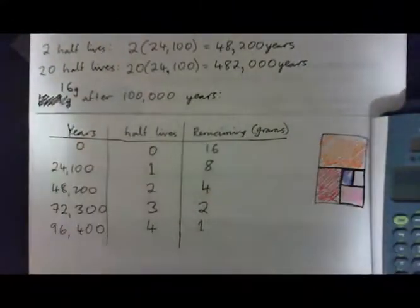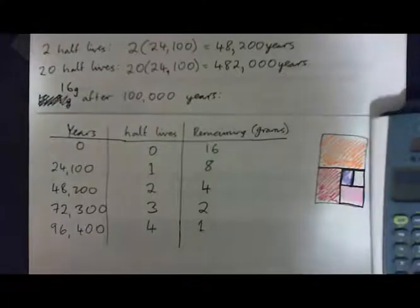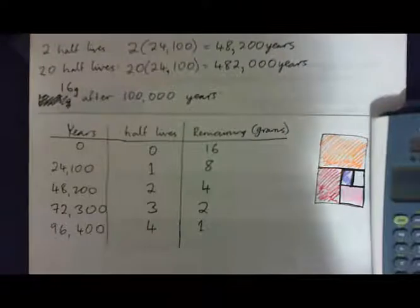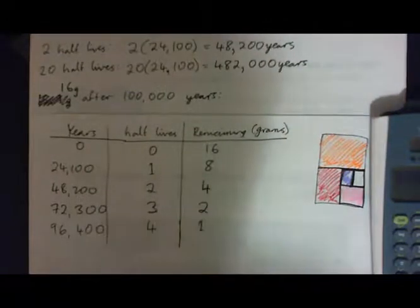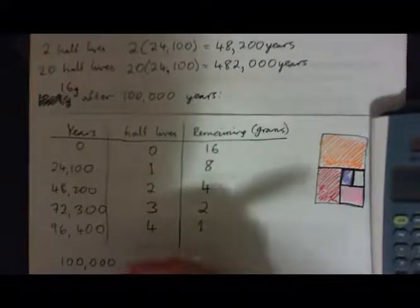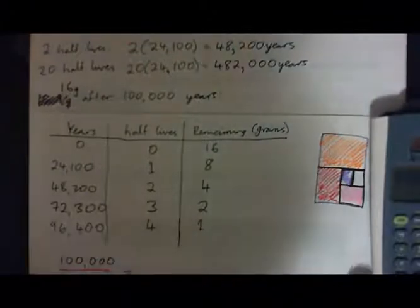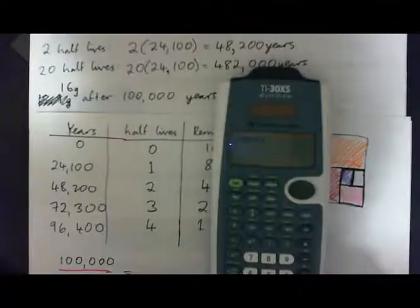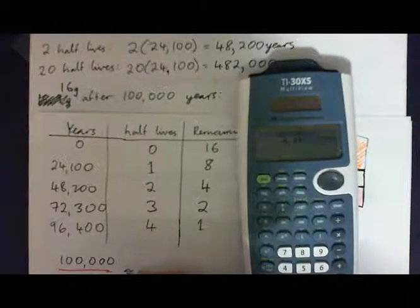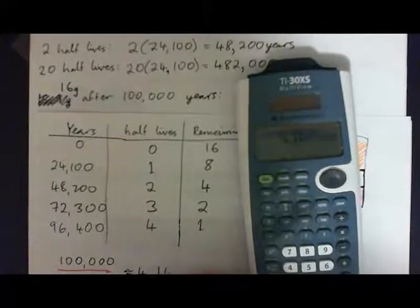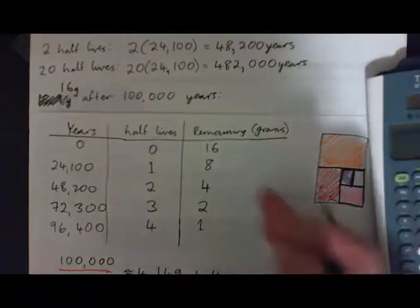You know, after 100,000 years, how much is left? The formula is: we've got to half it after each half-life, but we've got to convert the years into half-lives. So we start out with 100,000 years and divide that by 24,100. That gives us 4.149 and so on — it's about 4.149 half-lives. And then we've got to figure out how much is remaining.